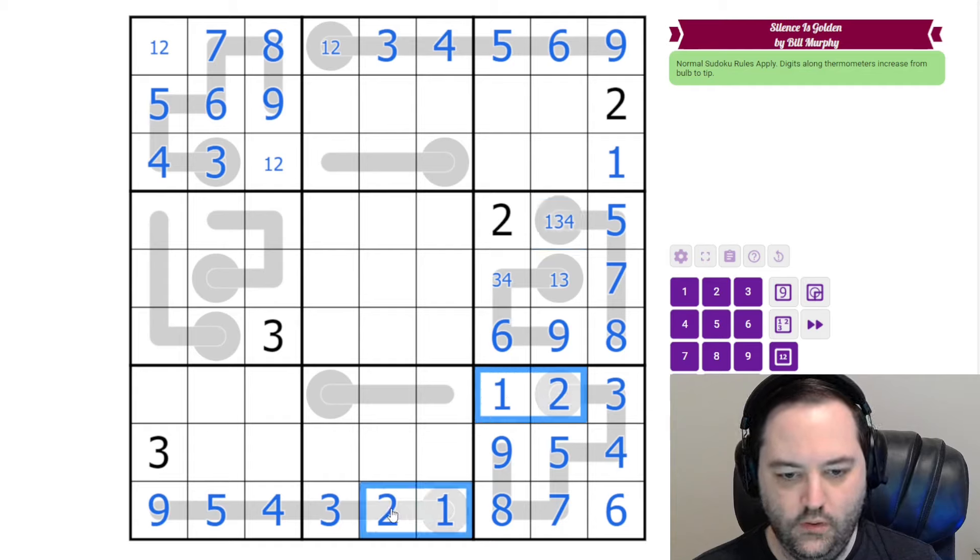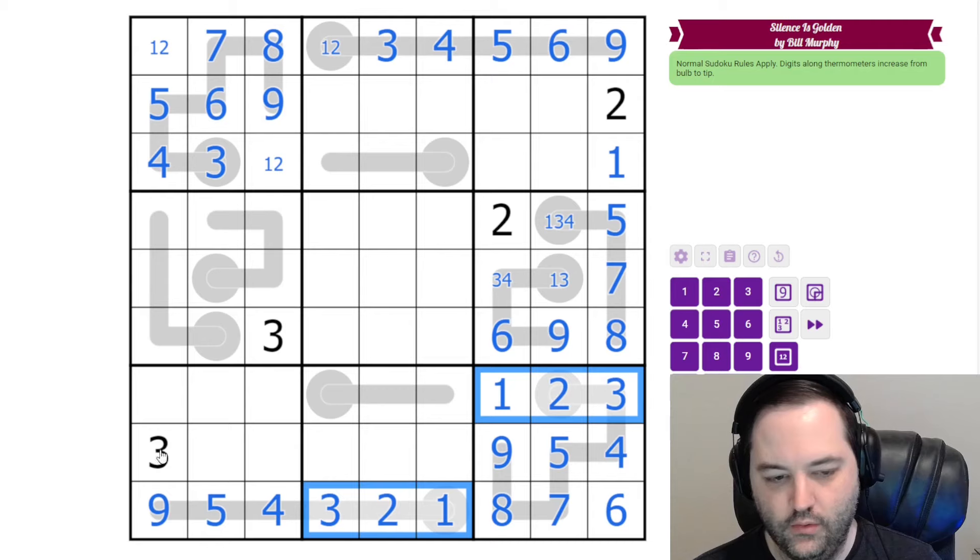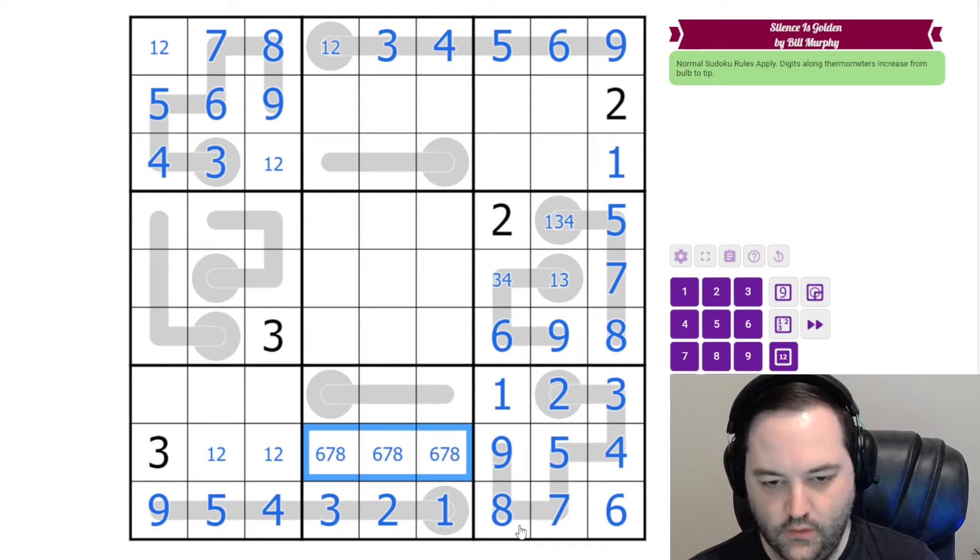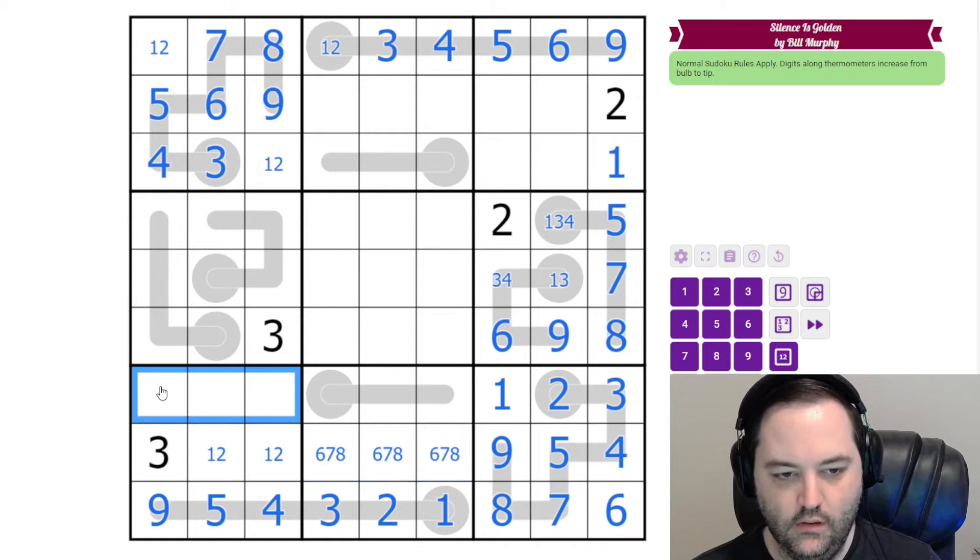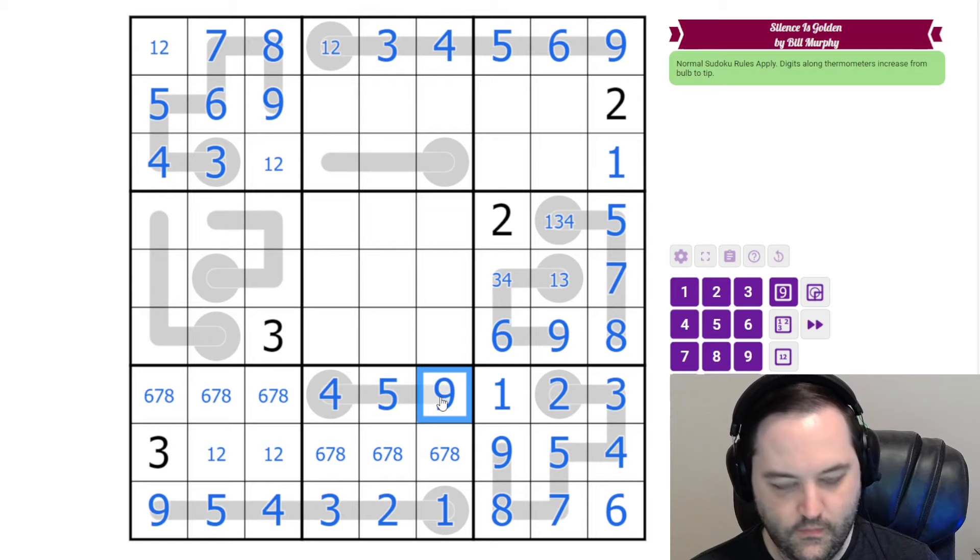All right, we need one and two in this box. And in fact, we have roping here. We have one, two, three, one, two, three. That means we're going to have one, two, three, two. And our remaining digits here are six, seven, eight, six, seven, eight, six, seven, eight. And then these digits are four, five, nine again. We know the order because of the thermo. So those are done.